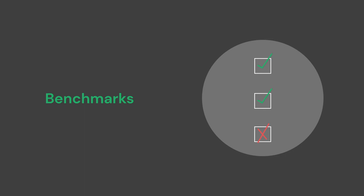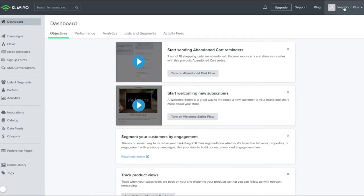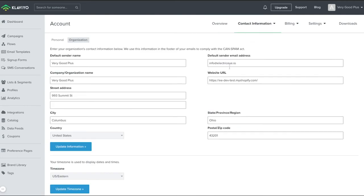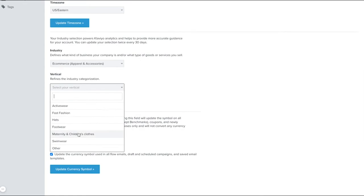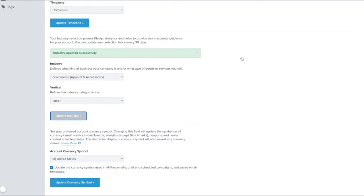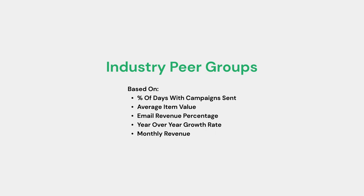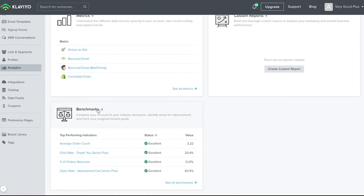You may need to adjust the chosen industry within your settings. To check this setting, navigate from the dropdown in the top right and select Account, then choose the Contact tab and then Organization. Scroll down the page and verify that you have the correct industry selected. Within your industry, your peer group is based on percentage of days with campaigns sent, average item value, email revenue percentage, year-over-year growth rate, and monthly revenue. From that base level understanding of your industry and particular business model, the benchmarks tool will show you how you stack up in comparison to your peer group.